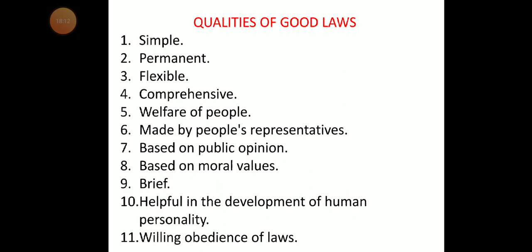Sixth, representative — laws should be made by representatives of the people and enforced properly, not imposed authoritatively. Seventh, based on public opinion — public opinion should be taken into consideration while making law; laws not aligned with public opinion will not last long. Eighth, based on moral values — laws should not violate moral values. Ninth, brevity — good laws are brief and not written in complicated words, because common people struggle to understand complex laws, which is where lawyers take advantage.